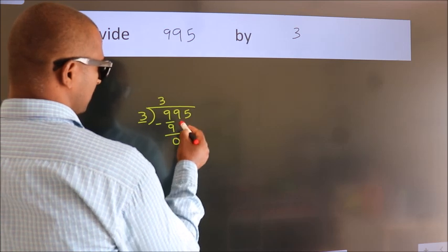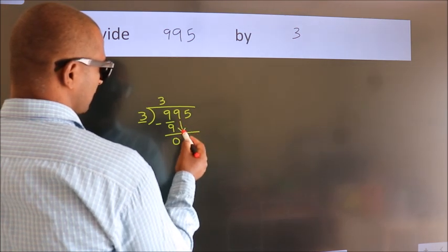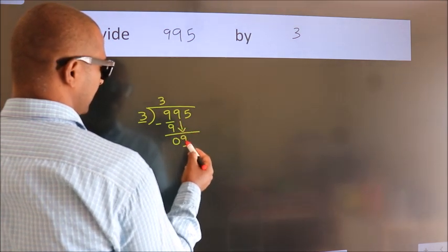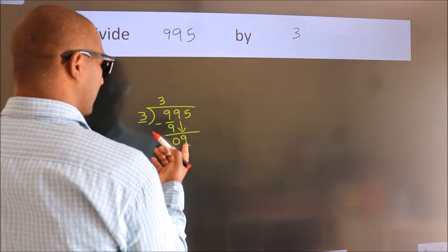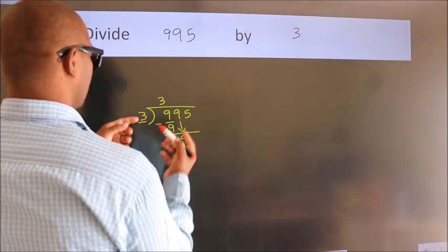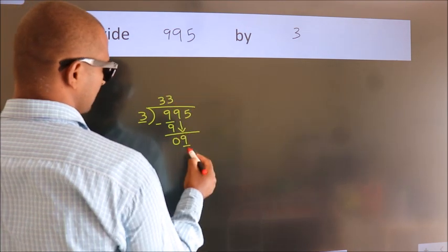After this, bring down the beside number. So 9 down. When do we get 9? In 3 table, 3 threes, 9.